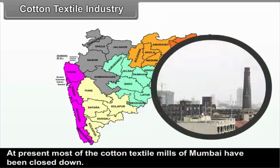Besides this, Malegao and Yevlar of Nasik district also have cotton textile industry. C. Aurangabad Division — In Marathwara region, Nandir, Aurangabad and Jalna are the centres of cotton textile mills. Cloth from Nandir is well known. D. Pune Division — In western Maharashtra region, Kolhapur, Italkaranji of Kolhapur district, Sangli, Miras and Madhavanagar of Sangli district are well known centres of cotton textile mills. Solapur and Barsi of Solapur district also have cotton textile mills. Apart from the above, Thane and Pune districts also have a few cotton textile centres.